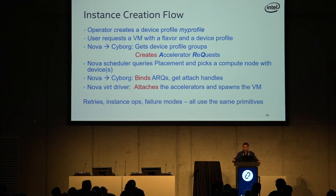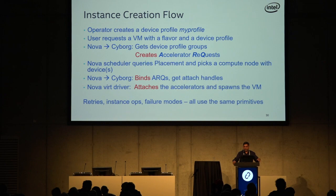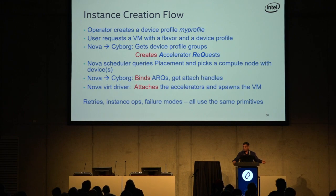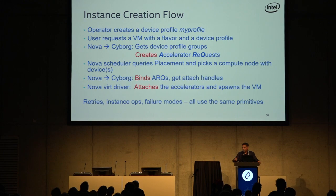At that point, Nova calls into Cyborg and says 'bind this ARQ,' meaning bind it to a particular host and a particular device. Cyborg then talks to the compute node and may program the FPGA or configure the GPU, or whatever is necessary. While that's going on, Nova proceeds in parallel — it calls into the compute node and works with Neutron, Cinder, and so on.